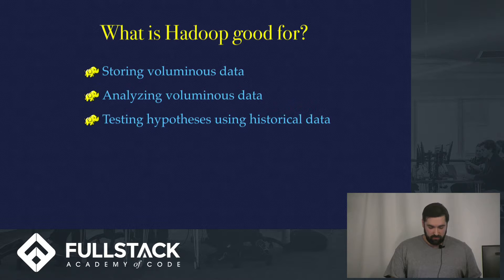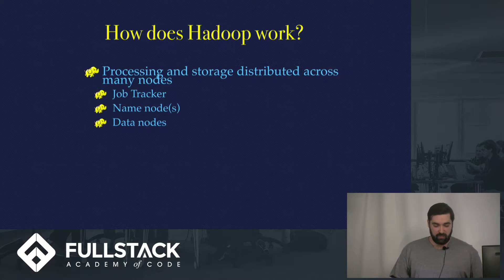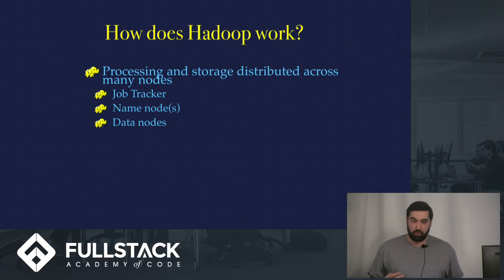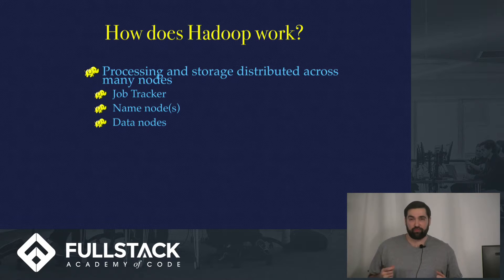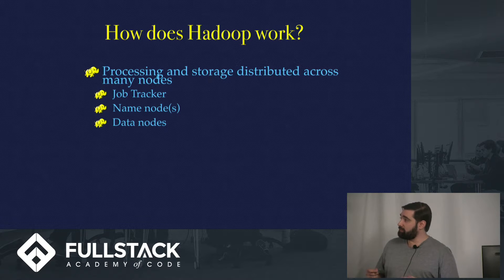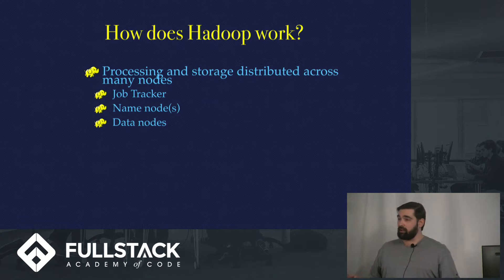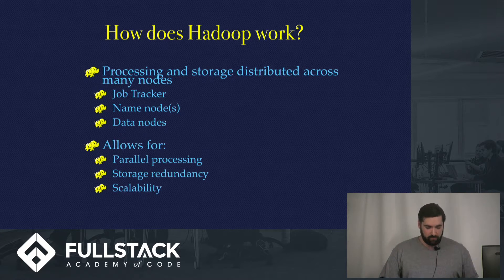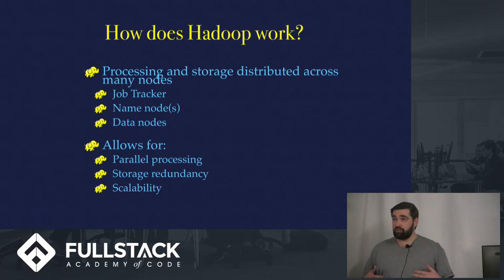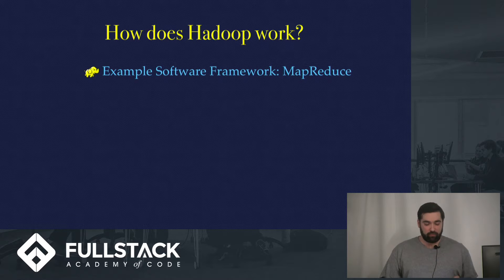How does Hadoop work? It processes and stores information distributed across many nodes. There are three components: the job tracker, the name nodes, and the data nodes. The job tracker farms out information requests and processing across different nodes in the cluster, tracking where each request is sent. The name nodes store the directory tree of all files in the file system, knowing where columns and files are. The data nodes hold the bulk of the storage. This architecture allows for parallel processing, storage redundancy, and scalability — you just add more data nodes to store more data.